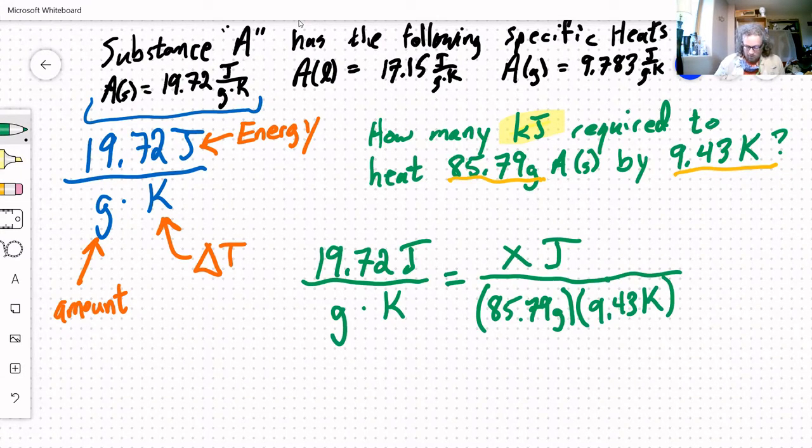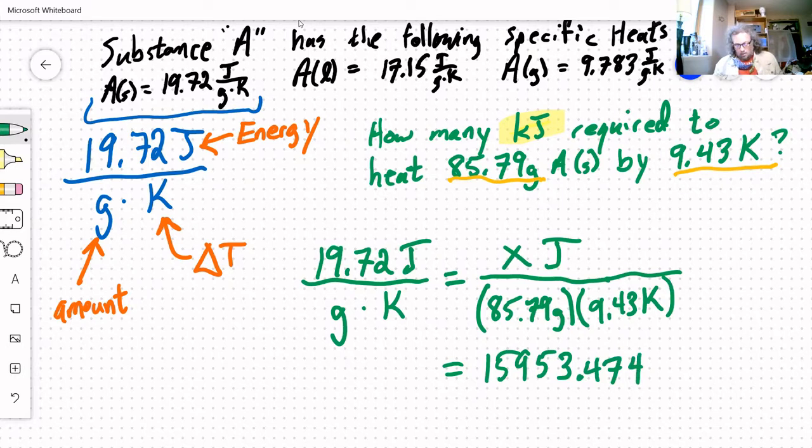So figuring this out, let me go ahead and calculate this one. 19.72 times 85.79 times 9.43. This is 15953.474, and that is joules.